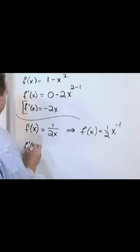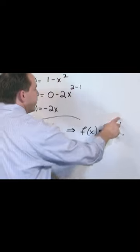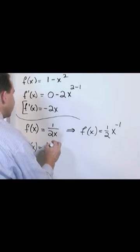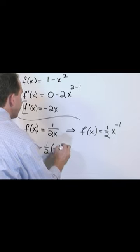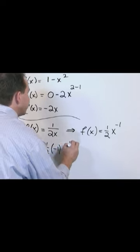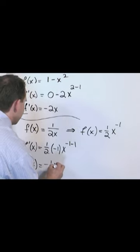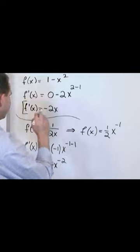So, the derivative is going to be, the 1 half is just going to stay out front, and then we take the derivative of this. The negative 1 does come down, so you have negative 1, and then you write x, and then the exponent, you have to subtract 1, but you have negative 1 minus 1. That's going to be negative 1 half times x to the negative 2.